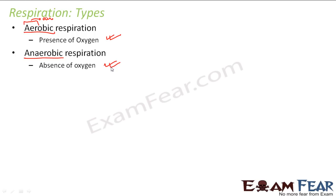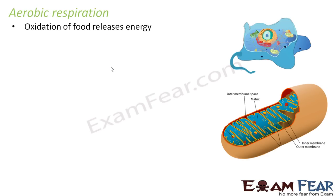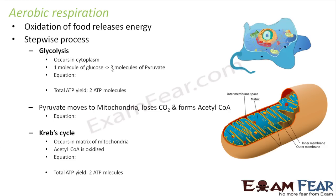Let us first talk about aerobic respiration, where oxidation of food releases energy in the presence of oxygen. Let us look at the process of aerobic respiration step by step. The first step that happens is glycolysis. It occurs in the cytoplasm of a cell — the cytoplasm is the fluid matter present in the cell.